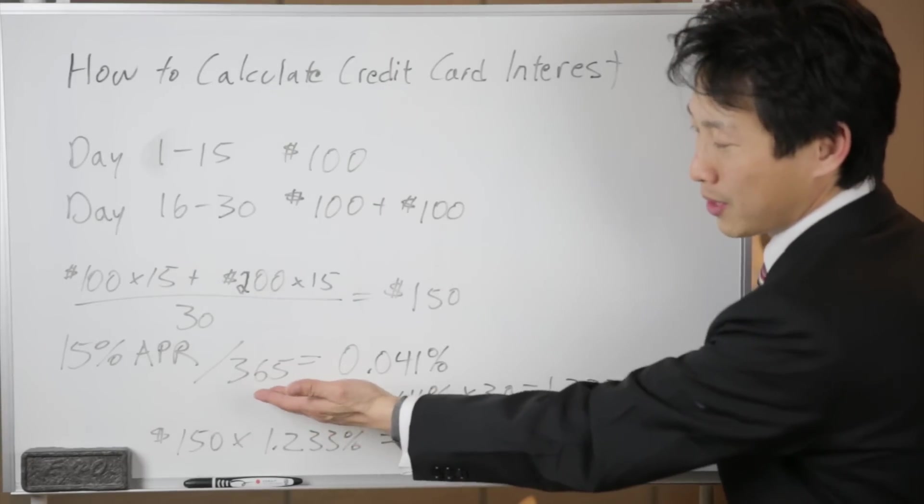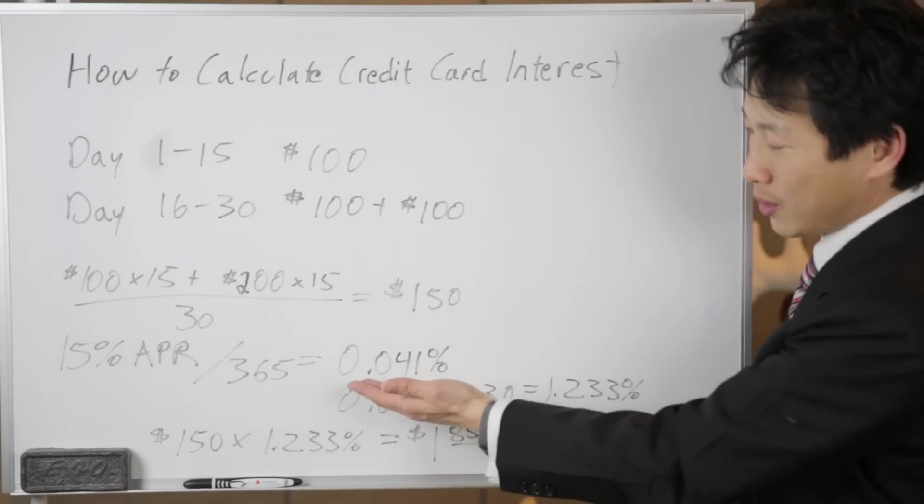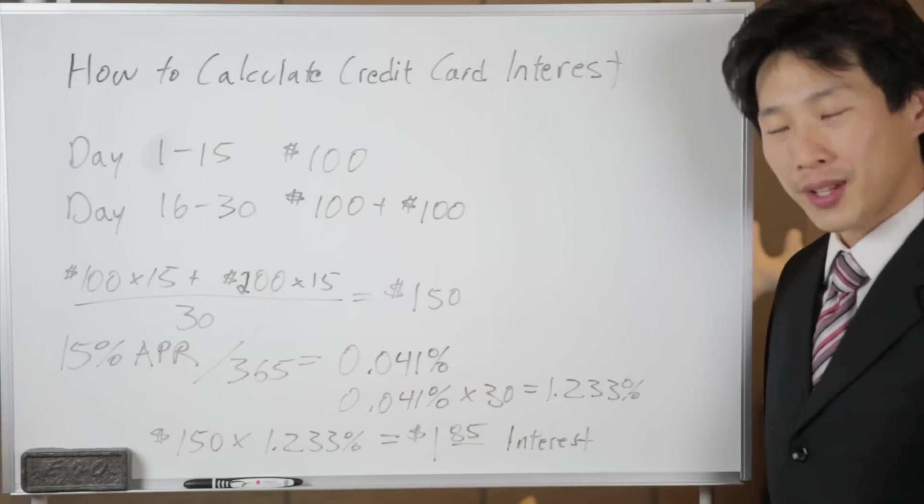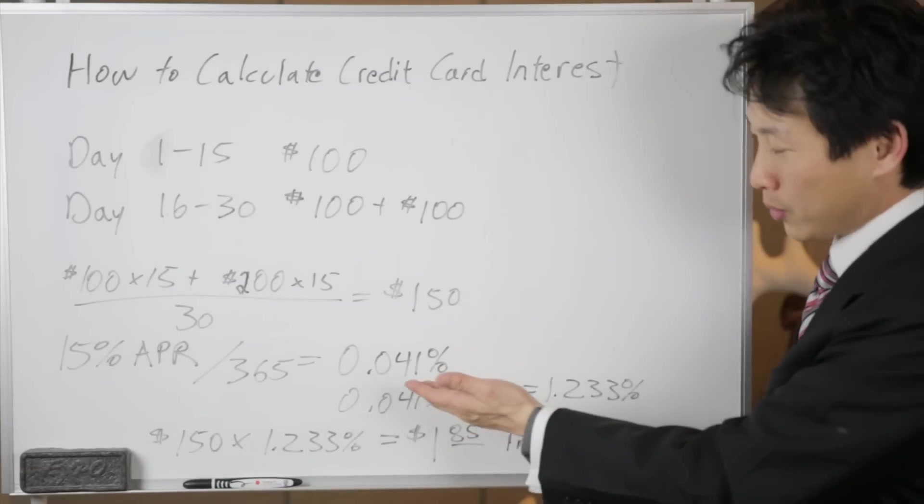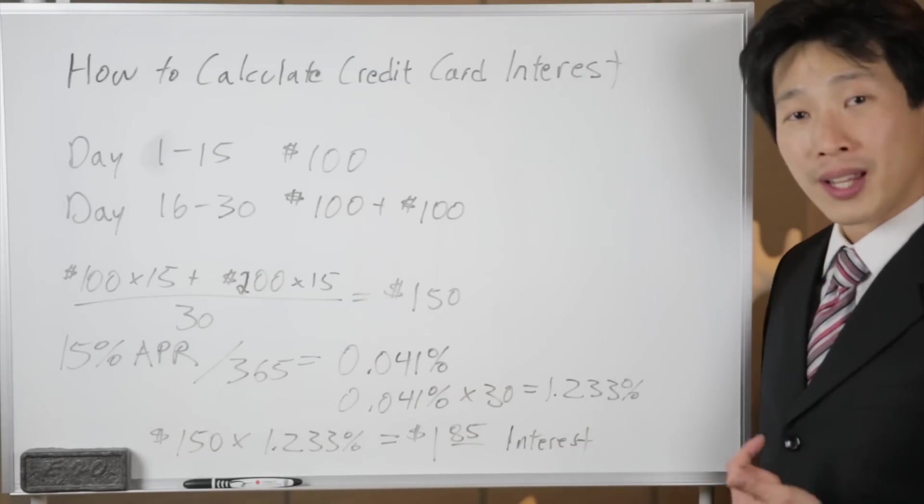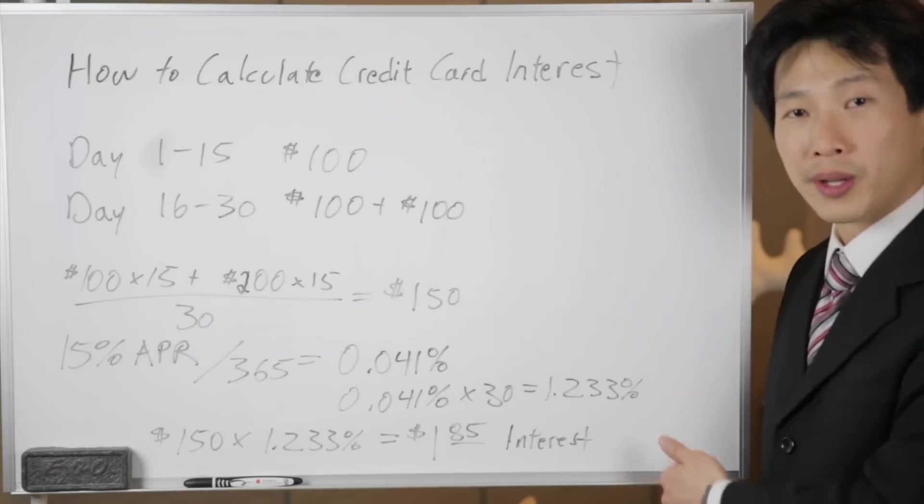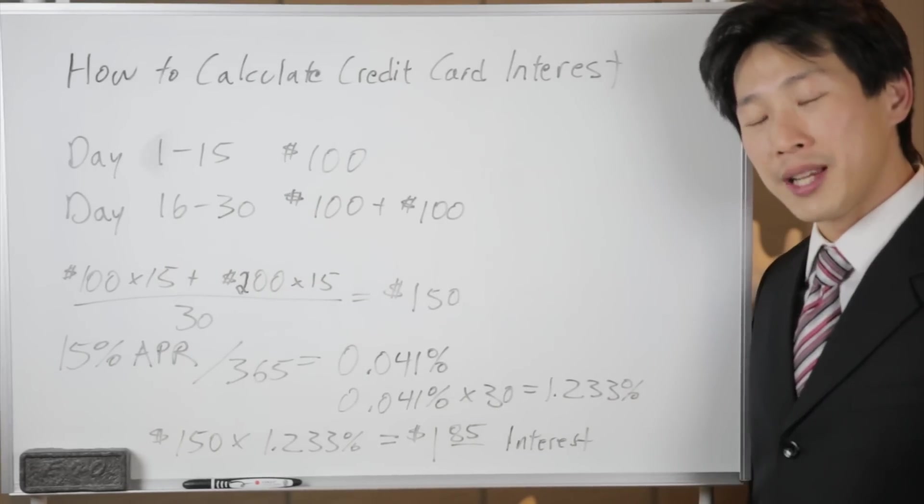We get 0.041%. And now in this current month that we're considering, which has 30 days, we multiply this by 30 and then we get 1.233%.